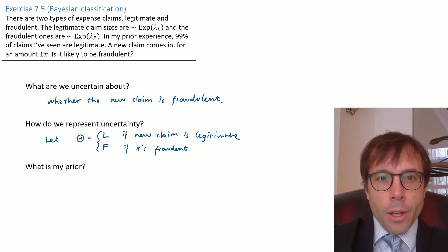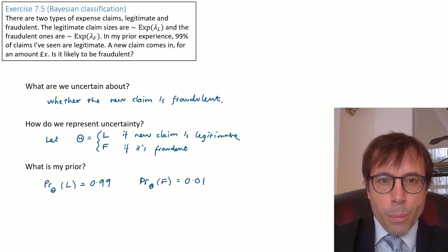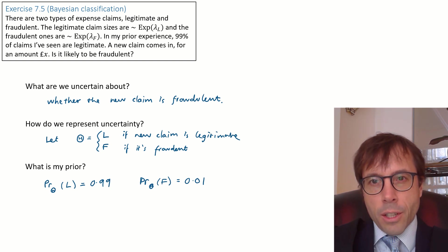Next, the Bayesians ask themselves, what's my prior on this unknown quantity? The question generously gives us a hint by using the word prior. It tells us, in my prior experience, 99% of claims I've seen are legitimate. I can use this as my prior. I'll say that the prior distribution on theta is, theta is equal to l with probability 99%, theta is f with probability 1%.